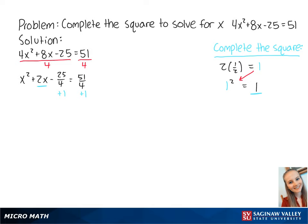So now we add 1 to both sides of the equation to get x² + 2x + 1 - 25/4 = 1 + 51/4. Now we can complete the square to get (x + 1)² - 25/4 = 1 + 51/4.